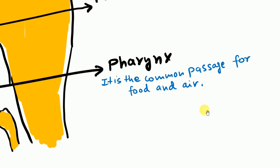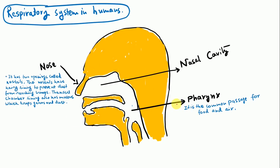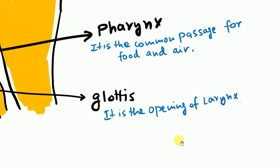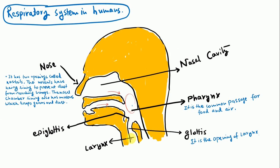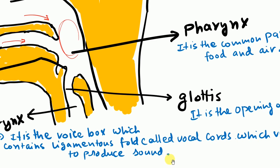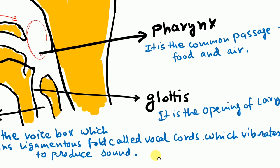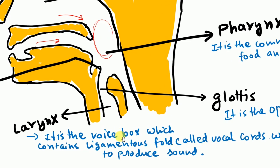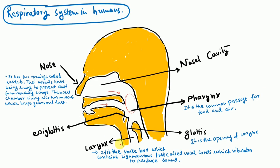Next is our pharynx. The pharynx is the common passage for both food and air — food enters from one side and air from the other. Next comes the glottis, which is the opening of the larynx. The larynx is the voice box, which contains the ligamentous fold called vocal cords. These vocal cords vibrate to produce sound whenever air comes out of the larynx.